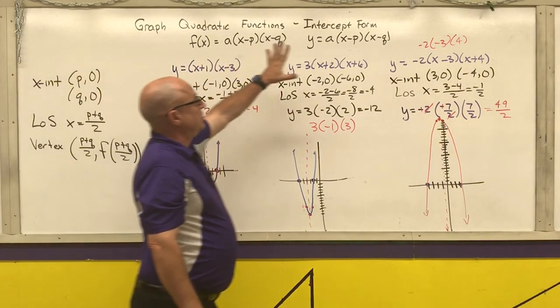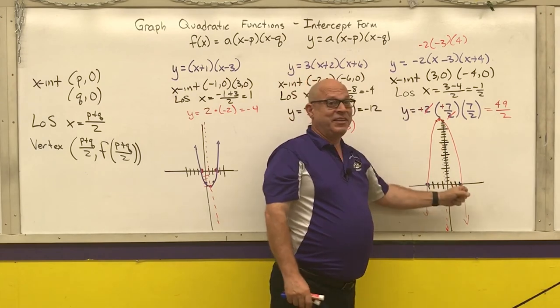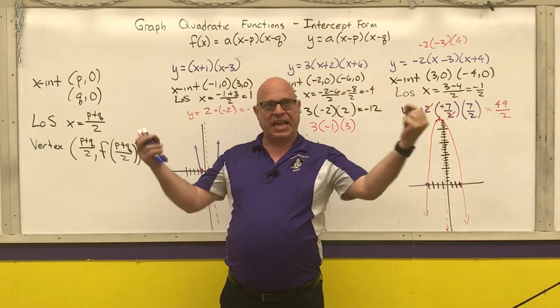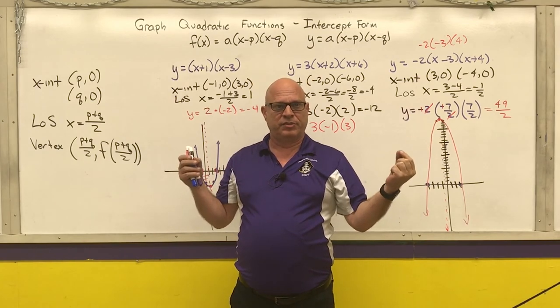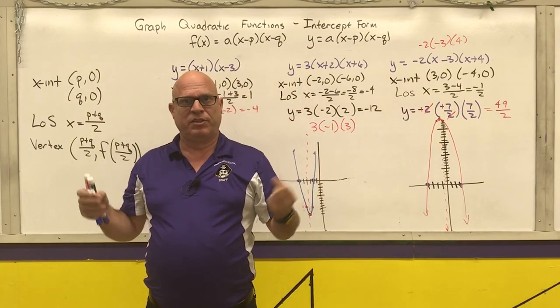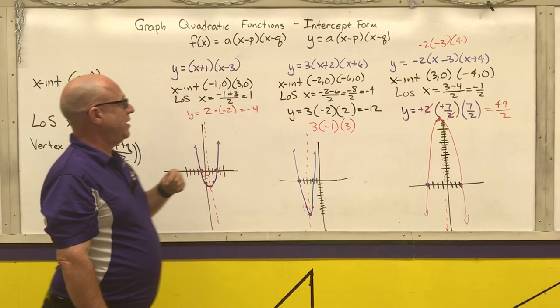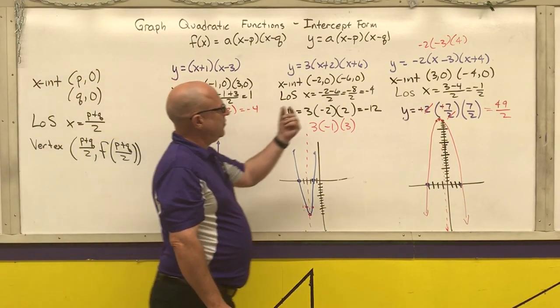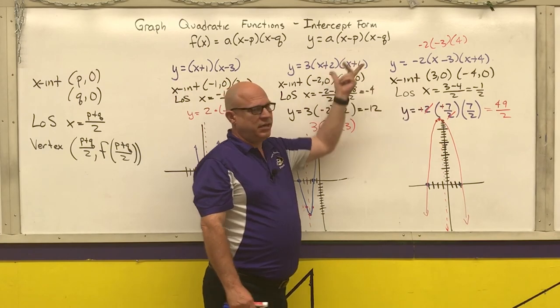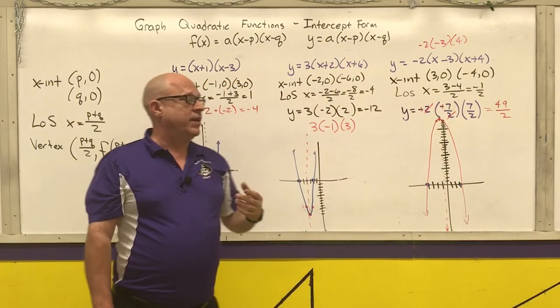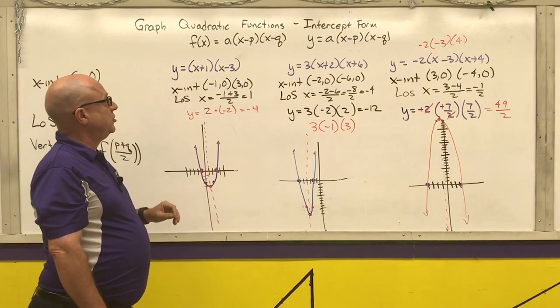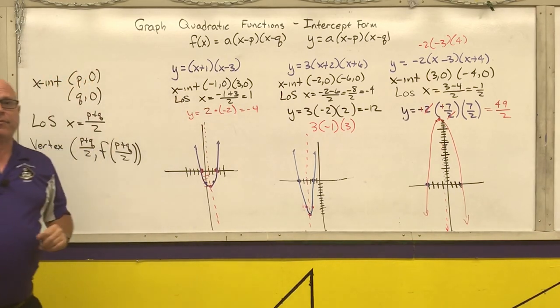Key thing. If it's in intercept form, you definitely need to plot the intercepts. The line of symmetry is halfway in between those two intercepts. And the way you find halfway in between the two numbers is you add them up and divide by 2. The way you find a y value of anything is you take whatever its x value is and you stick it into the original equation and you evaluate it. So that's how you graph quadratic functions that are in intercept form.